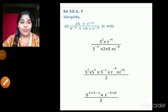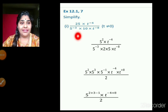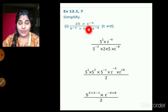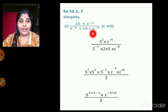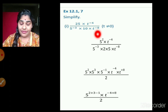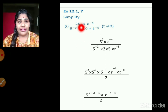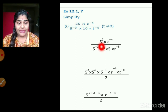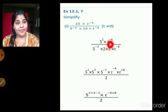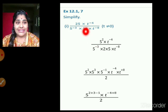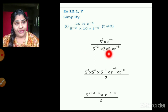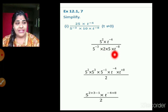Now the next one: 25 multiplied by t raised to negative 4, whole divided by 5 raised to negative 3, multiplied by 10, multiplied by t raised to negative 8. First, 25 is written as 5 squared. In the denominator: 5 raised to negative 3 as it is, 10 is written as 2 multiplied by 5, and t raised to negative 8 as it is.